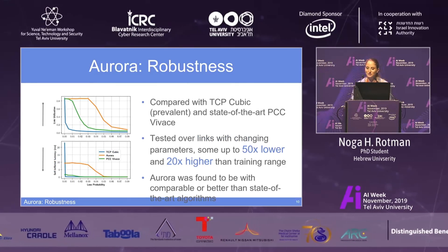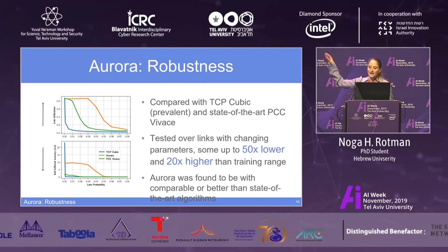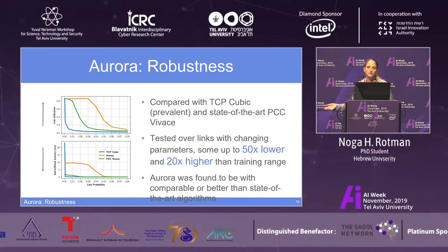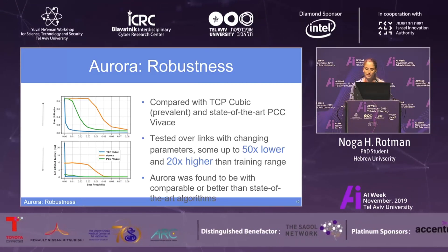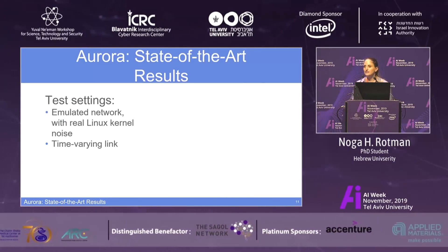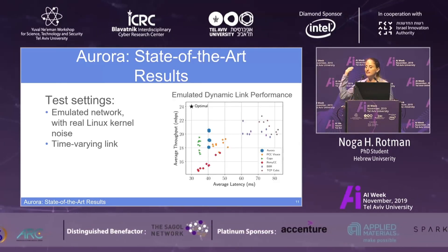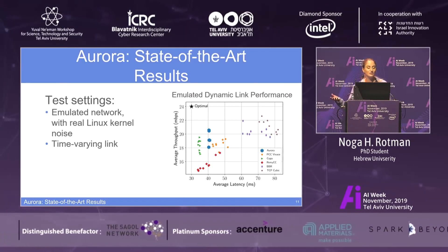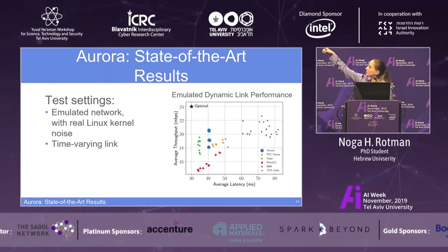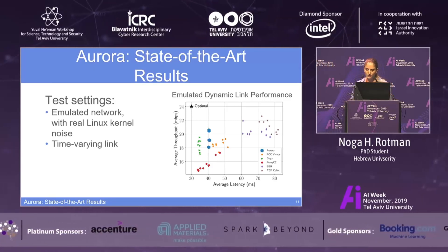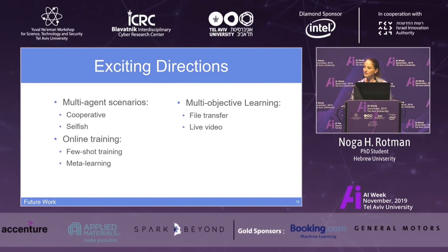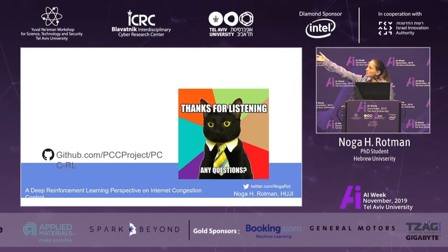We first checked that our agent is robust by testing on parameters much wider than our training set, and still got state-of-the-art results compared with TCP Cubic and PCC Vivace, a state-of-the-art algorithm. Additionally, we ran a tool called Pantheon, known in the networking community — you give it your algorithm and it runs it against state-of-the-art algorithms and outputs results. We want to be in the top left, meaning high throughput and low latency. Aurora is right up there on the Pareto front of state-of-the-art algorithms. We have a lot of exciting new directions, and our GitHub repo has the data. Thank you for listening.